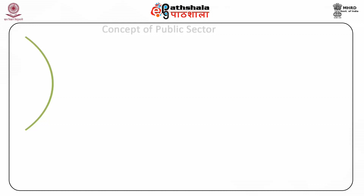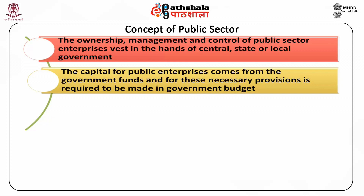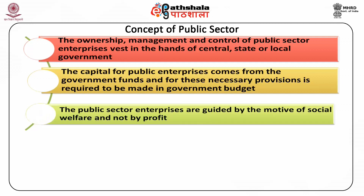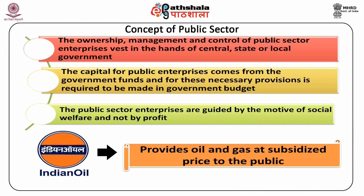Let us throw some light on the basic characteristics of public enterprises. First, the ownership, management and control of public sector enterprises rest in the hands of central, state or local government. Second, the capital for public enterprises comes from the government funds and necessary provisions are required to be made in the government budget. Third, the public sector enterprises are guided by the motive of social welfare and not by profit. For example, Indian Oil Corporation, a public sector enterprise, provides oil and gas at subsidized prices to the public.